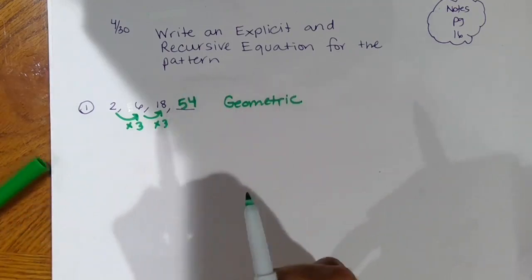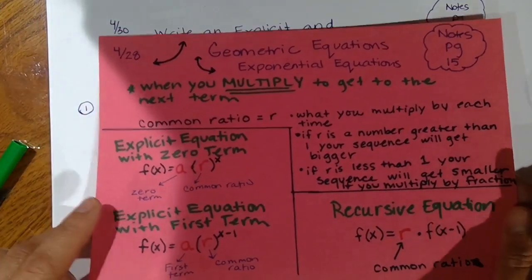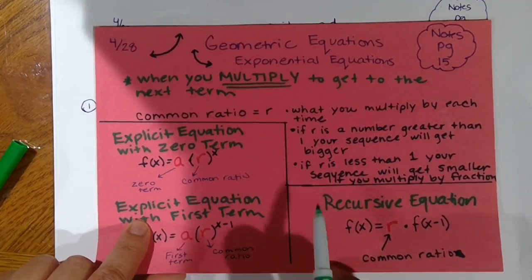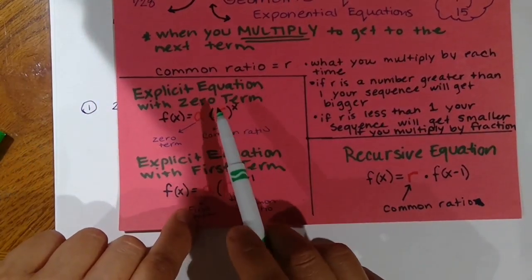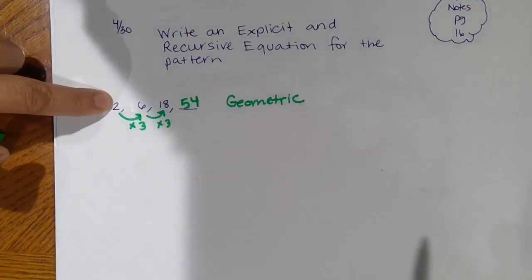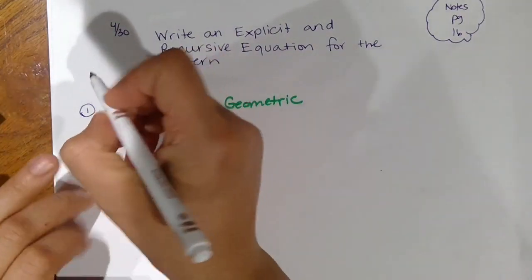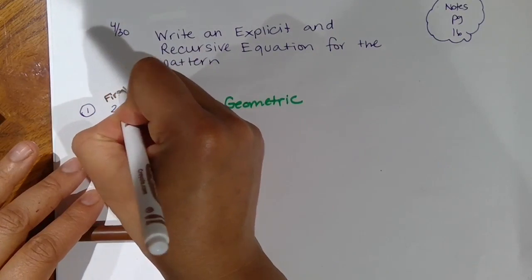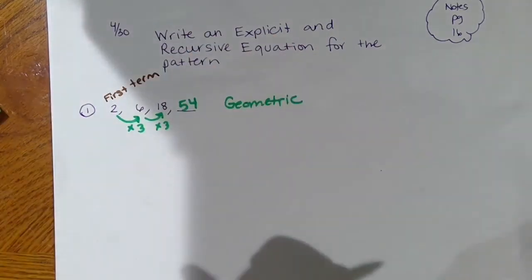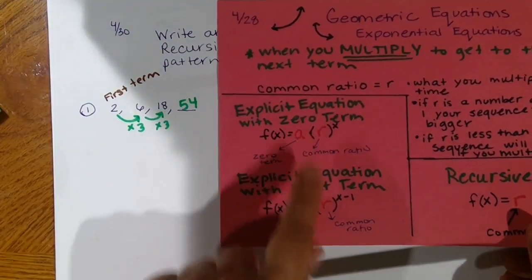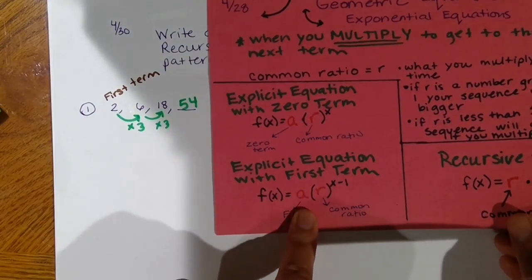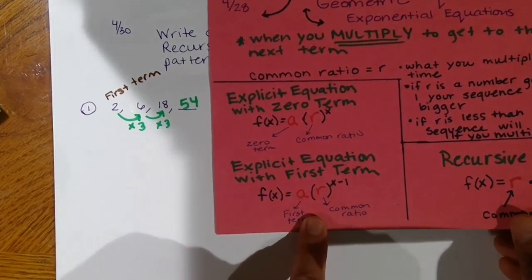This is definitely a geometric equation. So I'm going to get my notes on the geometric equation and write the explicit and recursive equations. For the explicit equation, I can either use my zero term or my first term. If they don't tell you it's the zero term, you can imply it's actually your first term. We're going to use the first term version.